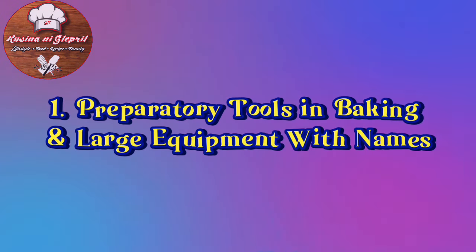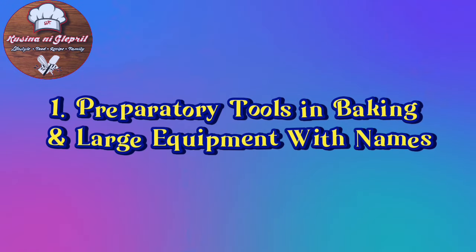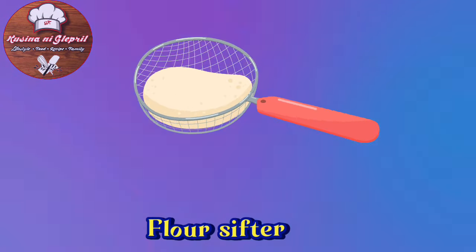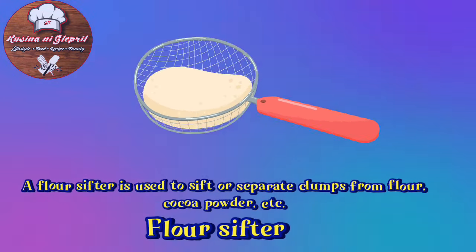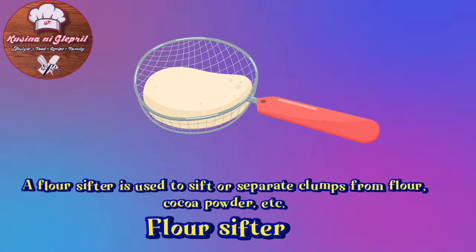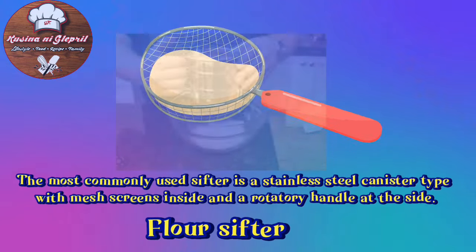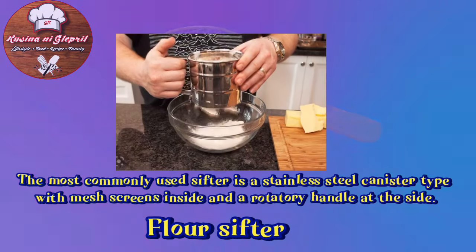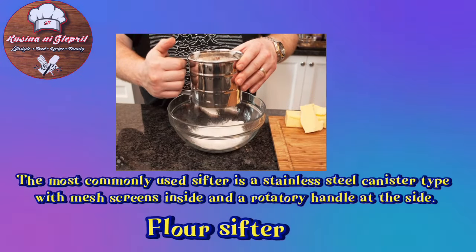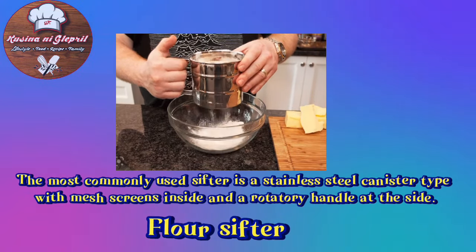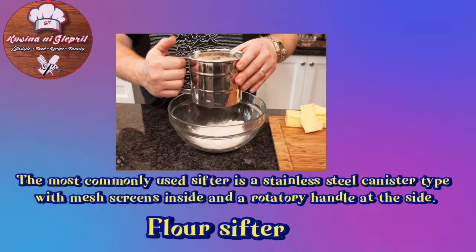Preparatory Tools and Large Baking Equipment. Flour Sifter: A flour sifter is used to sift or separate clumps from flour, cocoa powder, etc. The most commonly used sifter is a stainless steel canister type with mesh screens inside and a rotary handle at the side.